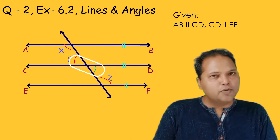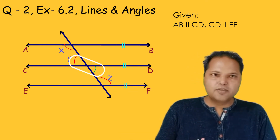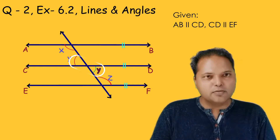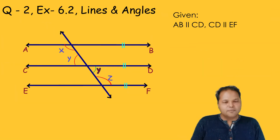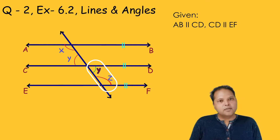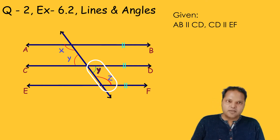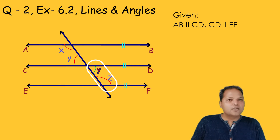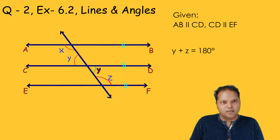Since these two angles are vertically opposite to each other, they will be equal. Since CD and EF are parallel to each other, the interior angles on the same side of the transversal are supplementary. Hence the addition of these two angles is equal to 180 degrees, so Y plus Z is equal to 180 degrees.